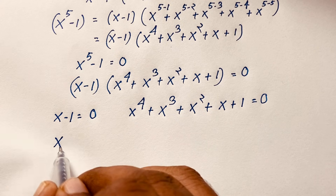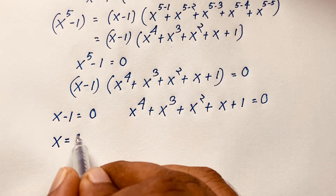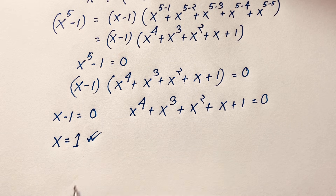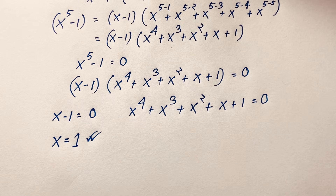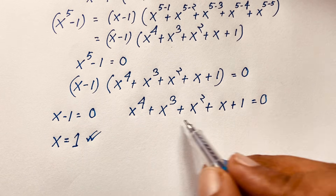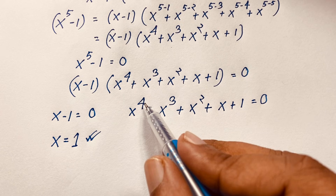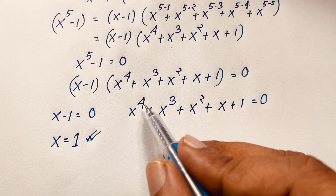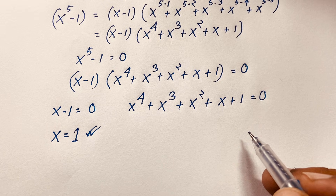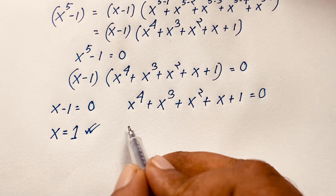If I move this 1 to the other side it will be positive 1, so we find our final solution x is equal to 1. This is our real solution in this exponential expression. But we'll find out here the 4 roots, because the exponent is 4. So how to simplify the 4 roots in this exponential expression? I divide both sides by x squared first of all.